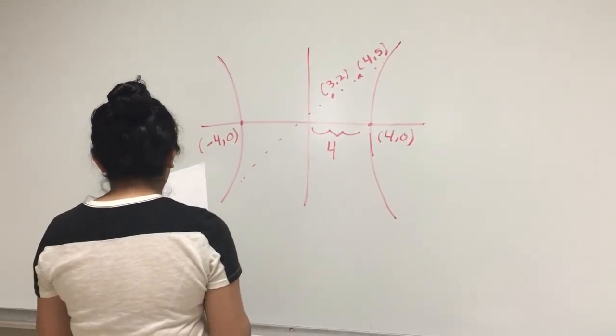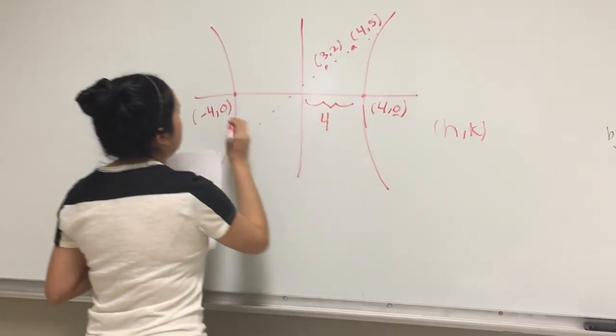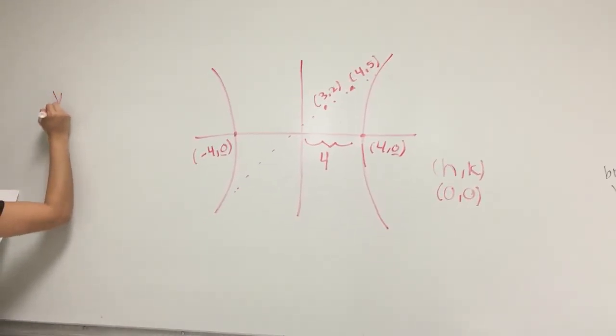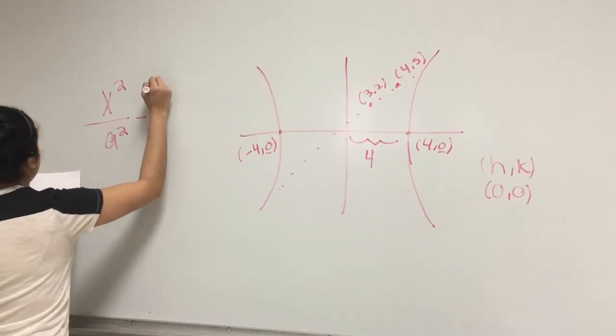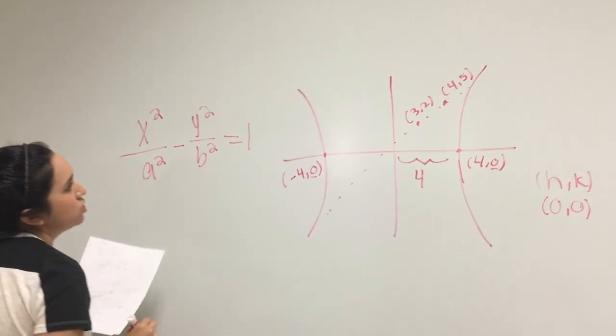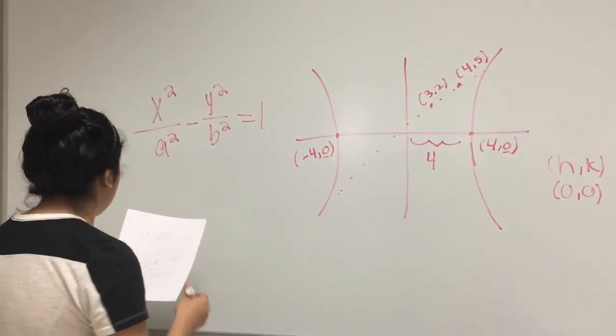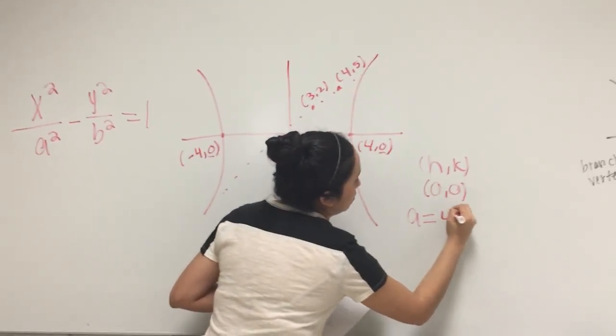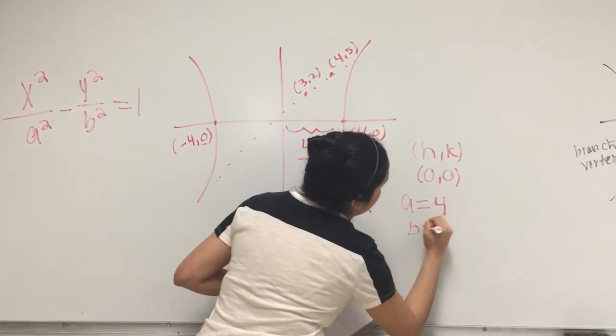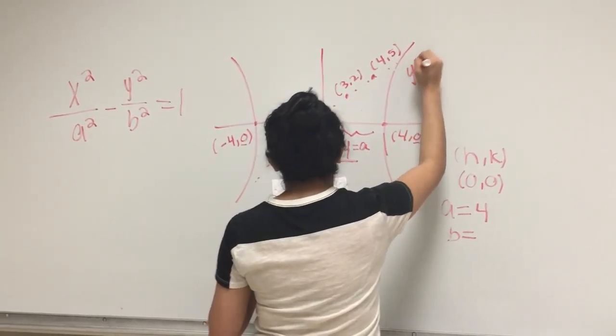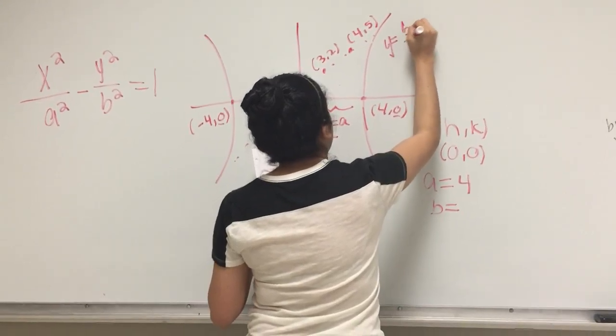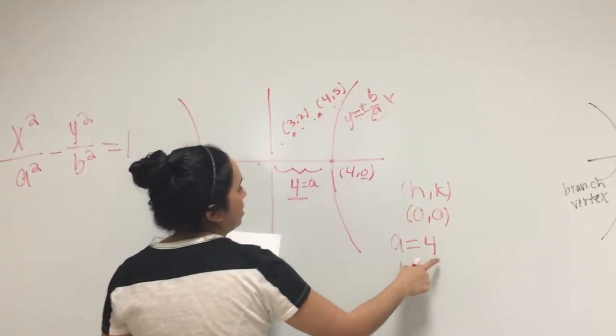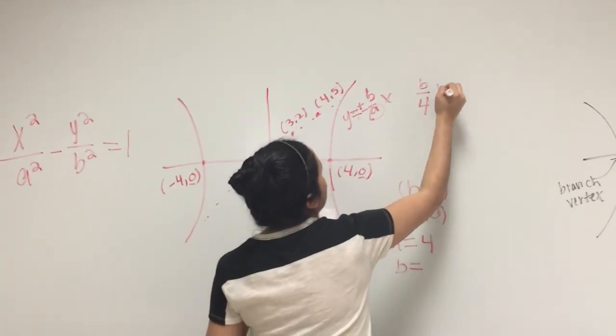And our asymptote is 4. Our HK, which is our X and Y, is 0, 0 since these two are 0. And our equation for our hyperbola is x squared over a squared minus y squared over b squared equals 1. So we're just going to plug in our information to get our equation for this type of hyperbola. A equals 4. We need to find B. The way we find B is y equals plus or minus B over AX. We know that our A is 4, so we're going to have B over 4X plus or minus.